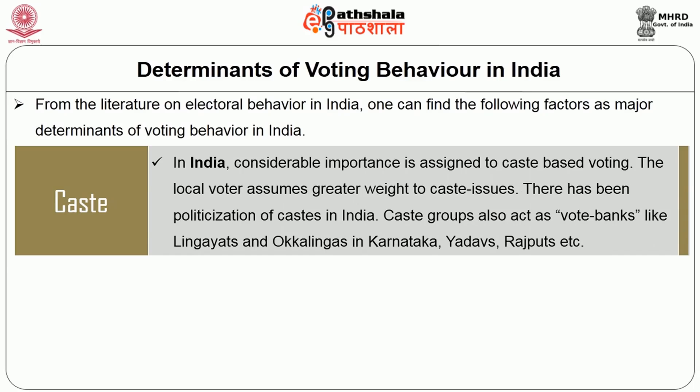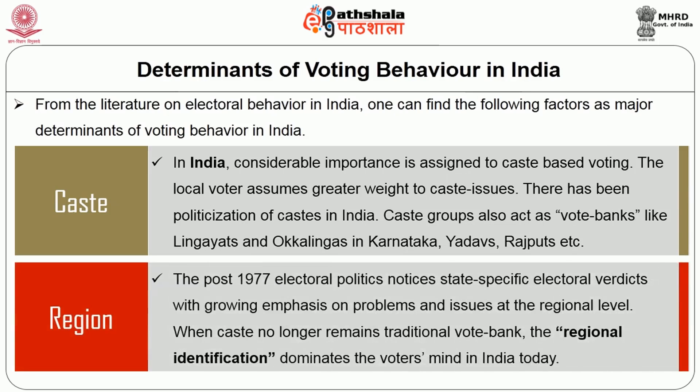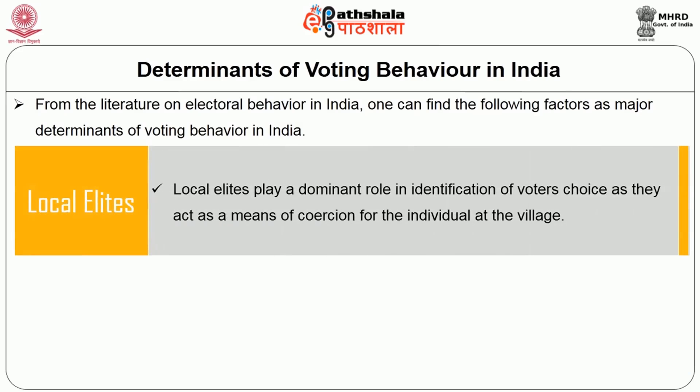There has been a politicisation of caste in India. Caste groups also act as voter banks, like Lingayats and Vokkaligas in Karnataka — the assembly poll result of 2013 was highly influenced by these groups. Similarly, Jadavs, Rajputs, Jats, Thakurs, and Kurmis in Bihar and Uttar Pradesh. The post-1977 electoral politics notices state-specific electoral verdicts with growing emphasis on problems and issues at the regional level, and these castes no longer remain traditional vote banks. The regional identification dominates the voters' minds in India today. Tenth, local elite — local elite play a dominant role in identifying voters' choices, acting as a means of coercion for individuals at the village level.